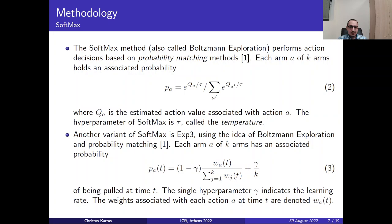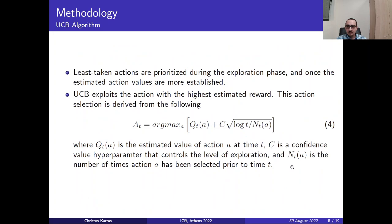Moving on to another technique, which is the softmax, also named as the Boltzmann exploration. It performs action decisions based on the probability matching method, where each arm A of K arms holds an associated probability of form of equation 2, where QA is the estimated action value associated with an action A. The hyperparameter of the softmax algorithm is T, which is called the temperature. Another variant of this method is the EXP3, utilizing the idea of the Boltzmann exploration and the probability matching. Each arm A of K arms has an associated probability as shown in equation 3. This is the probability of being pulled at time T, so the single hyperparameter gamma indicates the learning rate. The weights associated with each action A at a time T are denoted as WAT.